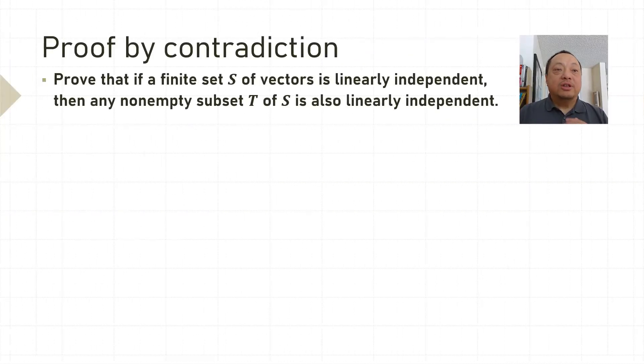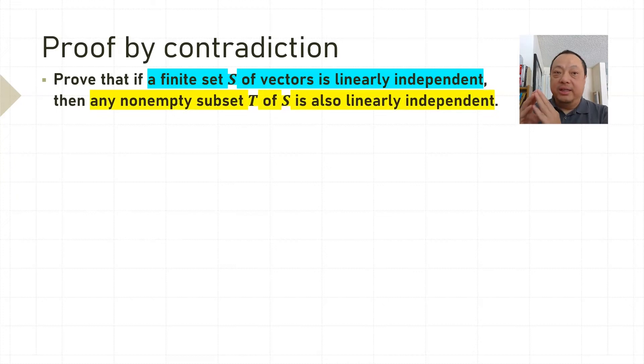Now let's go back to our proof by contradiction. Let's first highlight the premise and the conclusion. The premise is that S is linearly independent. The conclusion is, its subset T is also linearly independent.